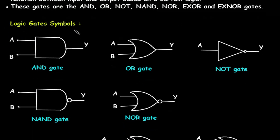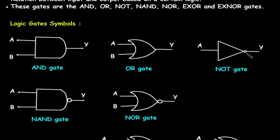Logic gate symbols. This is the symbol for AND gate — there are two inputs and one output. This is the symbol for OR gate — again, there are two inputs and only one output. This is the symbol for NOT gate — there is only one input and only one output.